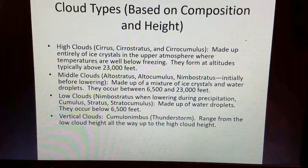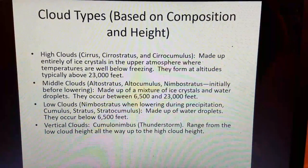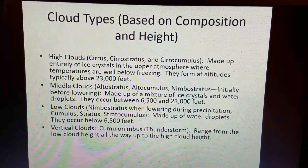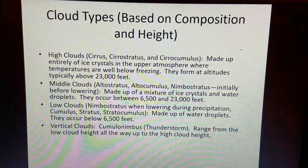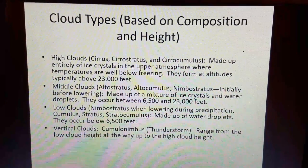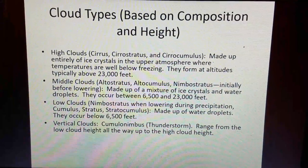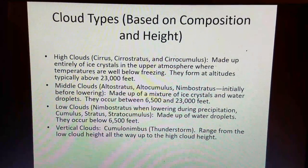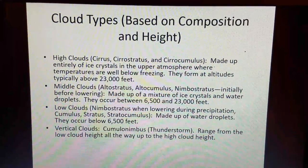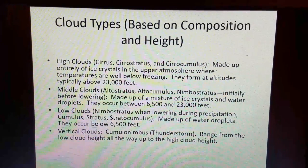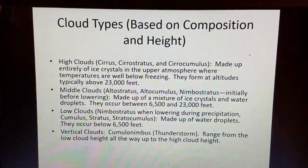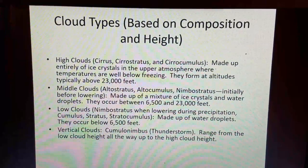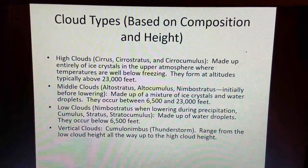Before showing you the different cloud types with pictures and characteristics, let's do a general overview. We'll start with high clouds: cirrus, cirrostratus, and cirrocumulus. High clouds are made up entirely of ice crystals in the upper atmosphere where temperatures are always well below freezing, and they generally form at altitudes above 23,000 feet. That's in the middle latitudes where we live — in polar regions those altitudes are lower, and in tropical regions those heights can be much higher because the atmosphere is warmer.